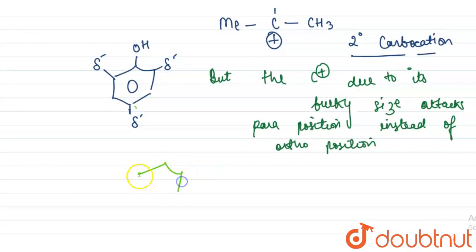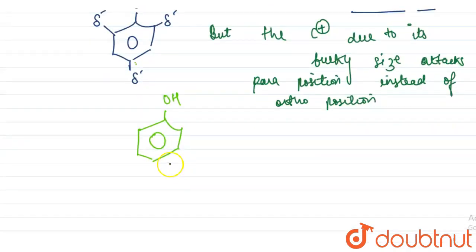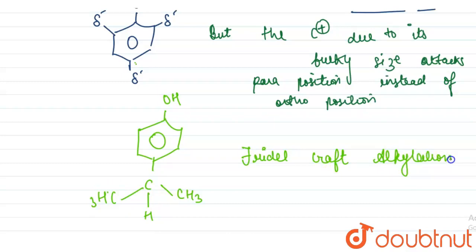The carbocation attacks at the para position, and we get this compound. This is CH3, CH3, and this here is hydrogen. This process is Friedel-Crafts alkylation.